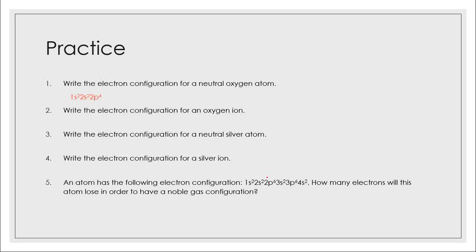Now write the electron configuration for an oxygen ion. This time I'm not telling you the charge — you need to know it whenever you see the word ion. Check your periodic table and the oxidation numbers you wrote down: oxygen has a charge of minus two, so the ion is O2-. How does that change the configuration? Instead of 1s2, 2s2, 2p4, it is gaining two electrons, so that becomes 1s2, 2s2, 2p6.